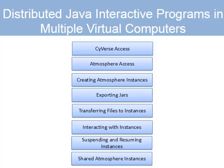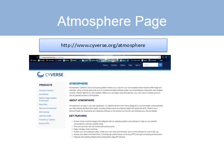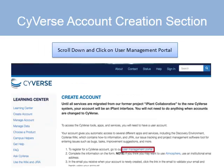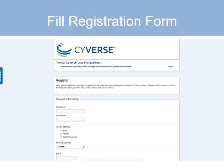Using Atmosphere involves many steps and you need to start with the Atmosphere page, scroll down, and click on User Management Portal. That will take you to a form that is straightforward to fill, and once you fill it and submit it you have a CyVerse account.